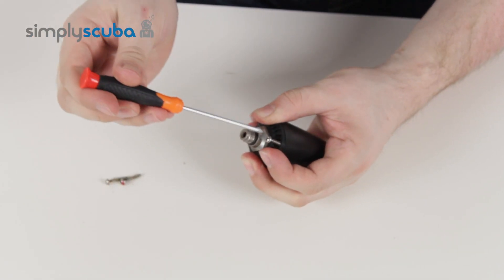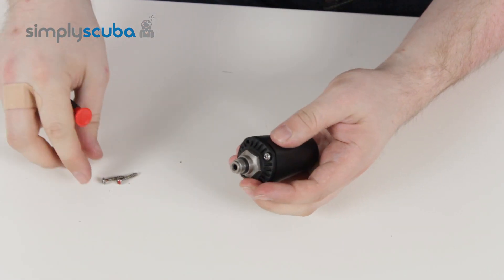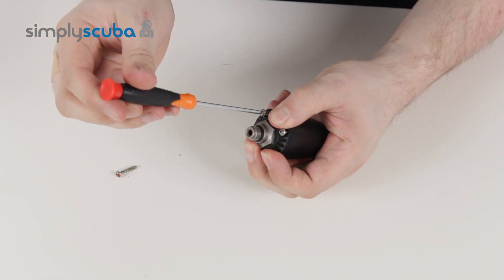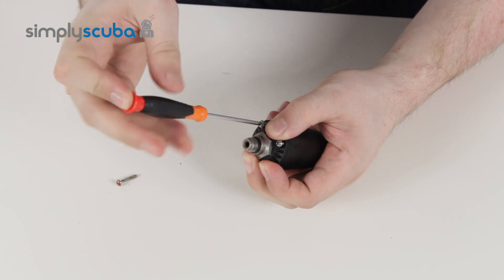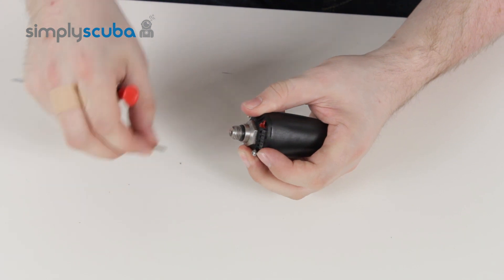I like to do opposite corners and screw them in just a couple of turns. That just secures it in position and makes sure that it's nice and straight. Otherwise, if you do one up completely and then start to do the others, it can just go in diagonally and it's not very neat.